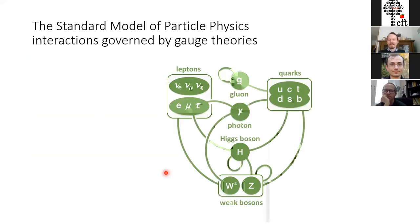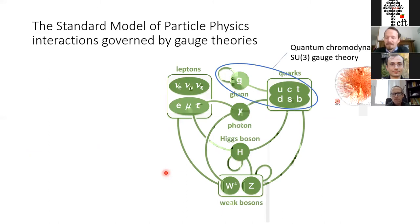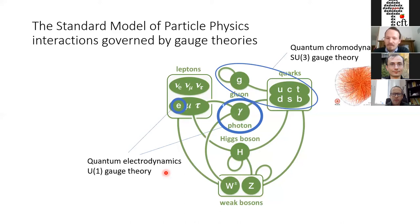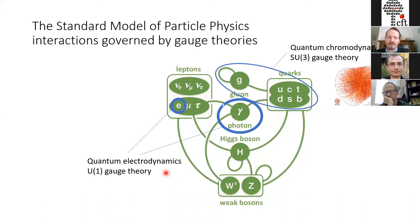We are ultimately interested in understanding elementary particles, governed by the standard model of particle physics, which is described by gauge theories. Quarks and gluons are described by an SU(3) gauge theory — quantum chromodynamics — which is very challenging. Something simpler is QED: the interplay of charges with the electric and magnetic field is a U(1) gauge theory, which is much simpler as a starting point for testing implementation strategies.